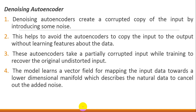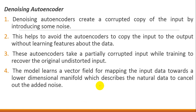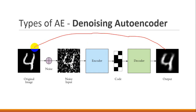This autoencoder takes a partially corrupted input while training to recover the original undistorted input. Point number four: the model learns a vector field for mapping the input data towards a lower-dimensional manifold which describes the natural data, to cancel out the added noise. So the output will be the clean original data. To understand this — first, we have the original image, then the noise layer is added, and after decoding, we recover the same original image. The purpose of adding noise is so it will not directly copy and paste.